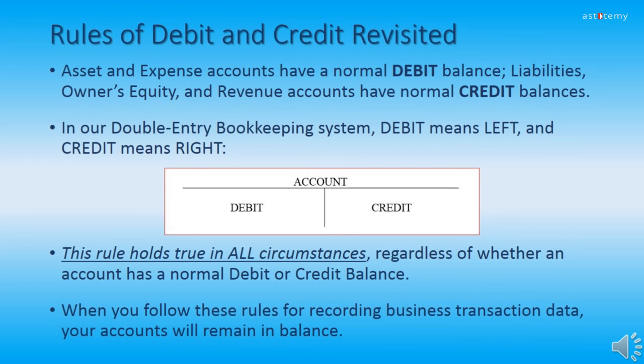Now we will revisit the rules of debit and credit. Assets and expense accounts have a normal debit balance. Liabilities, owner's equity, and revenue accounts have a normal credit balance. In our double entry bookkeeping system, debit simply means left and credit simply means right. This holds true in all circumstances regardless of whether an account has a normal debit or credit balance. Please do not read too much into what debit means or what credit means — just remember simply that debit means left and credit means right.